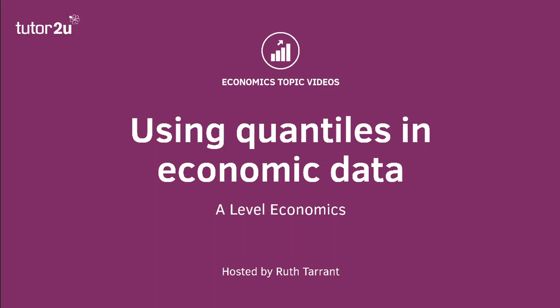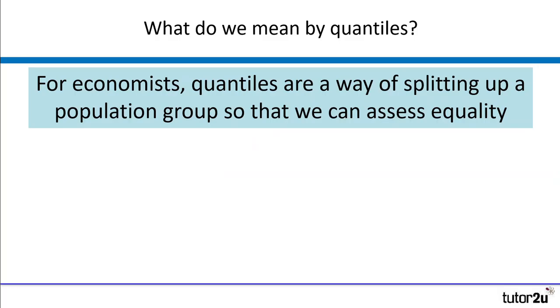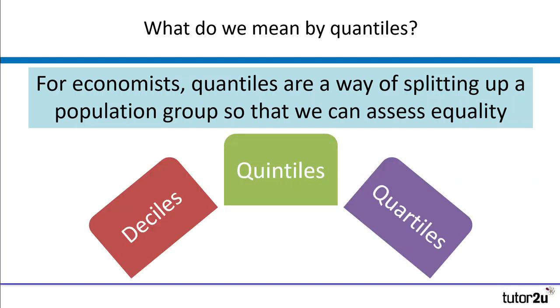So what we're going to have a look at to start with is what we mean by a quantile. All it is is just a way of splitting up a population group so that we can assess equality or the distribution of something across a population.